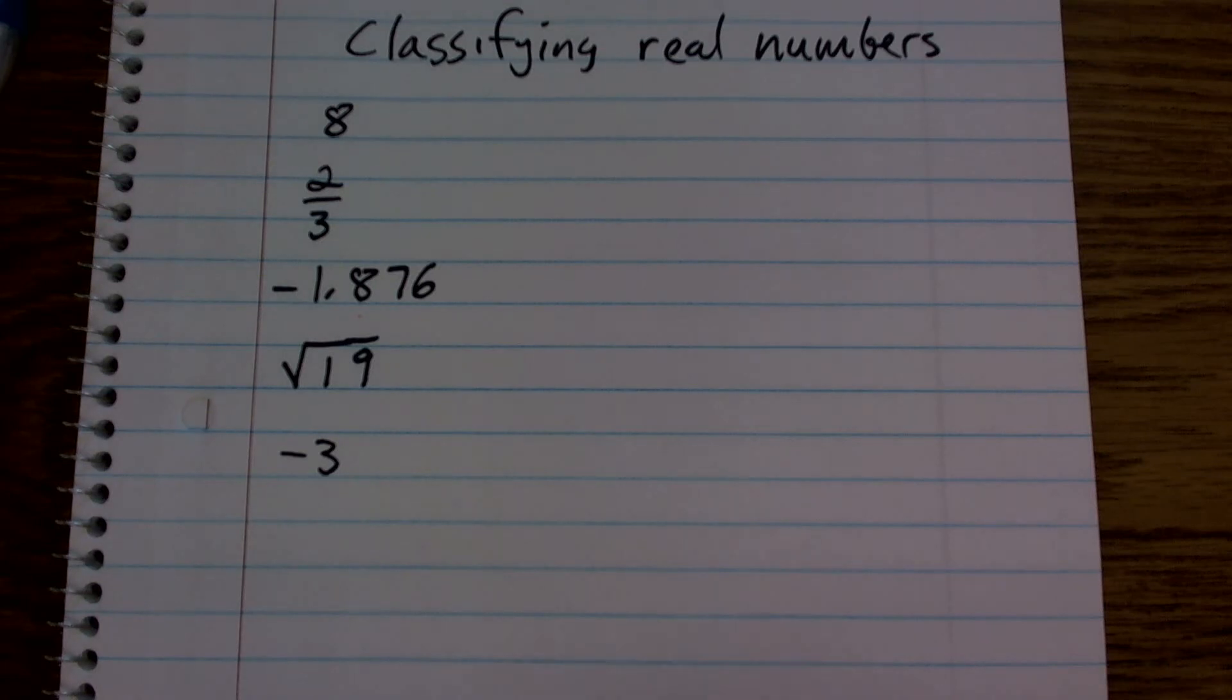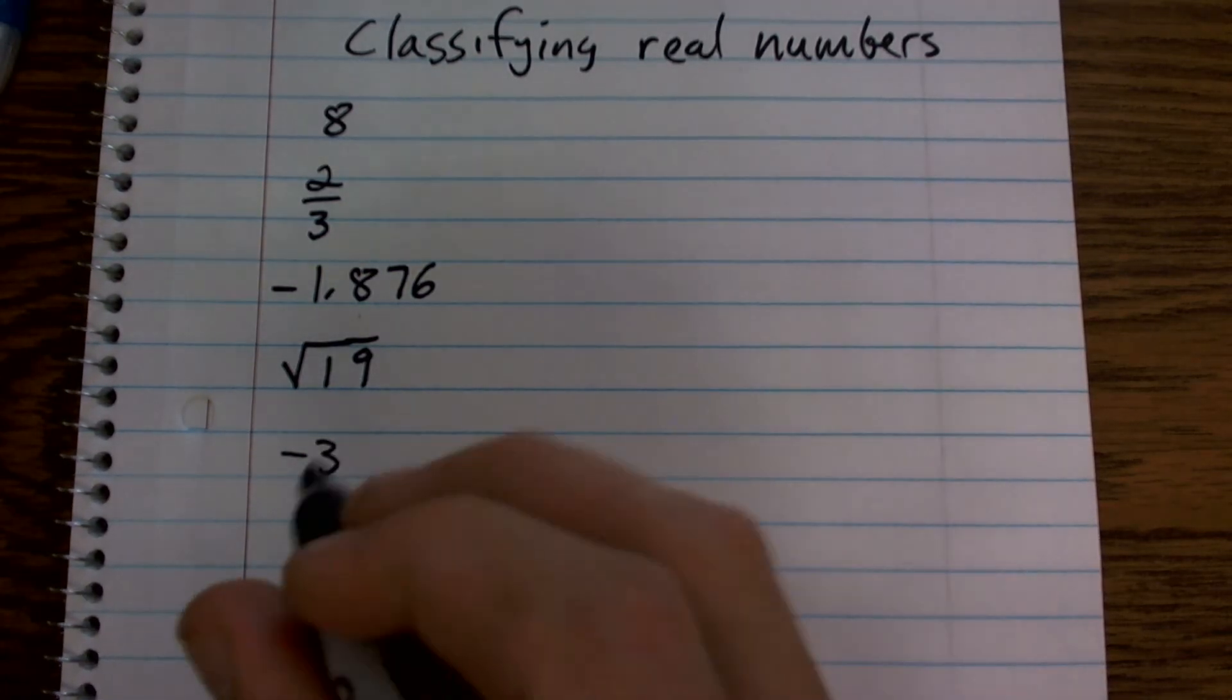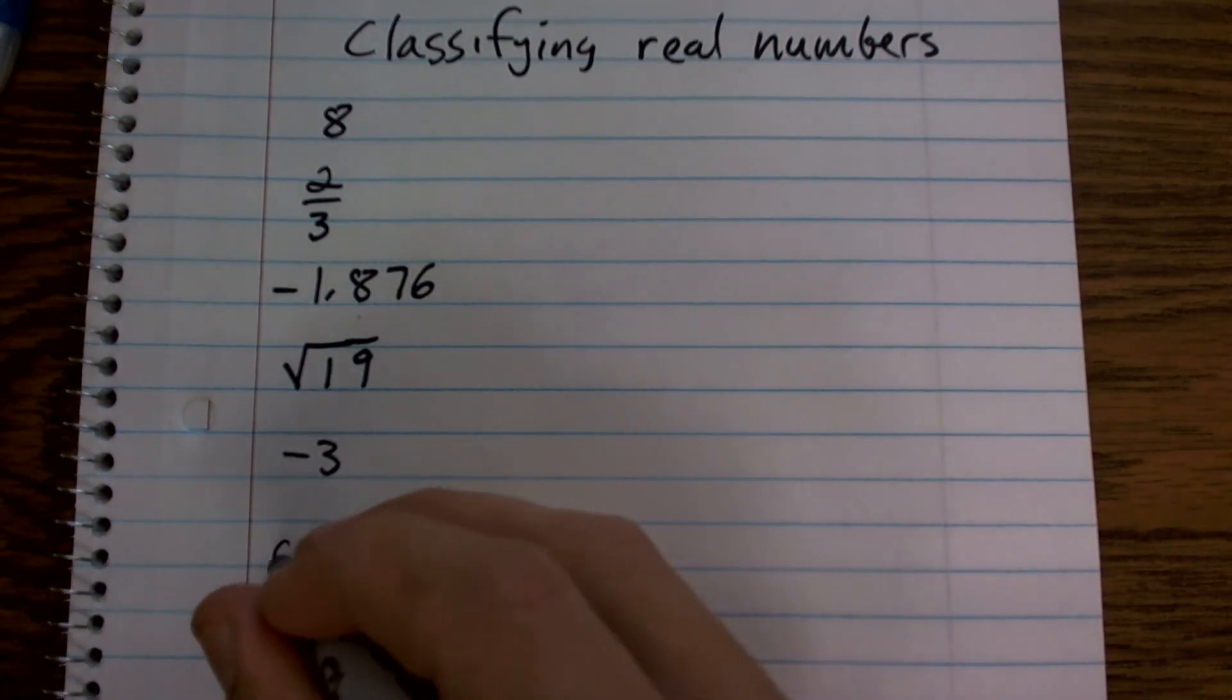All right, so I went through the whole spiel of what exactly are whole numbers. We have a whole bunch of them here. We have our first ones are our counting numbers, our natural numbers.